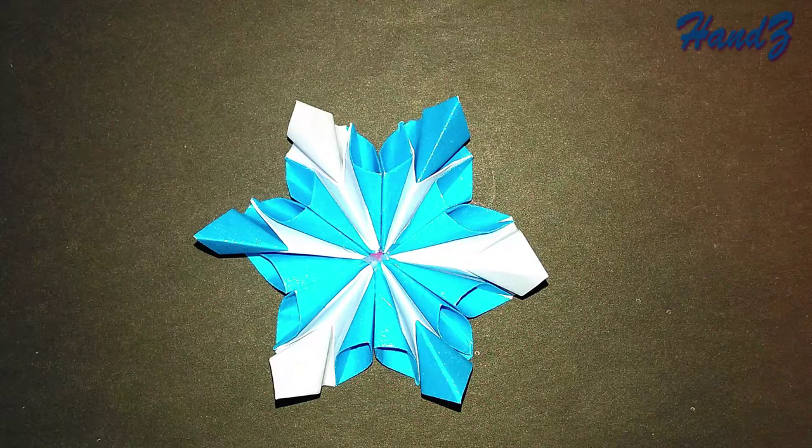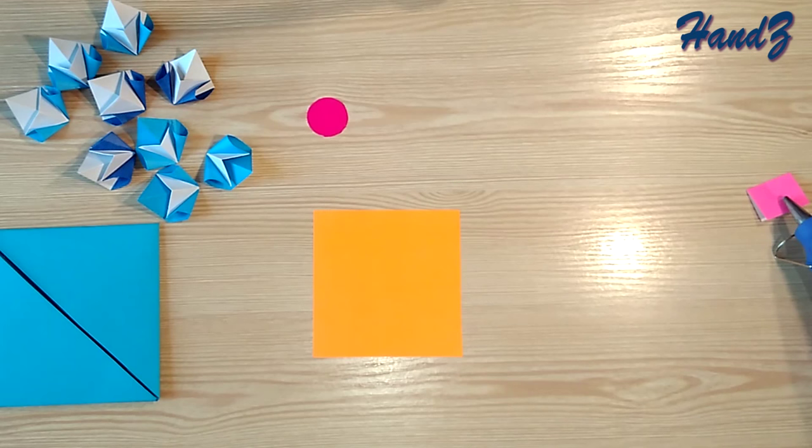It's quite easy! Let's start! Take a square piece of paper. In my case, the side length of the orange square is 8 cm, and the blue petals 5 cm.